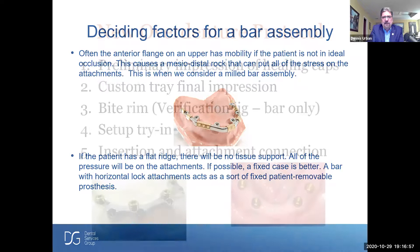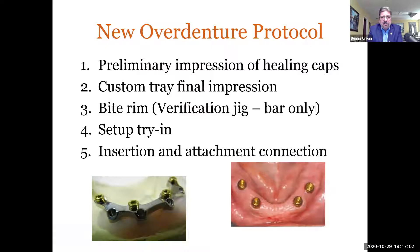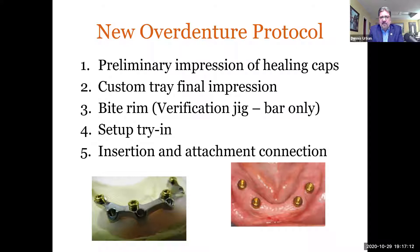For the overdenture protocol: we want a preliminary impression of the healing caps, then a custom tray final impression. If we're doing a bar, we definitely want to make a verification jig — I usually make that at the same time as the bite registration. After everything's verified, we go for the setup for try-in. We'll have our internal strengthener in there with the try-in, then do our insertion and attachment connection, either in the laboratory or intraorally in the office.